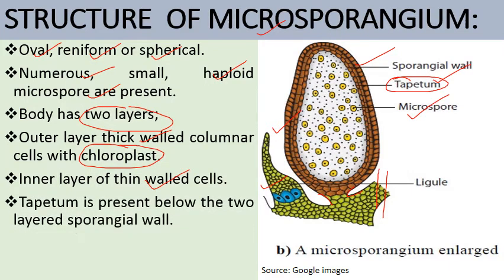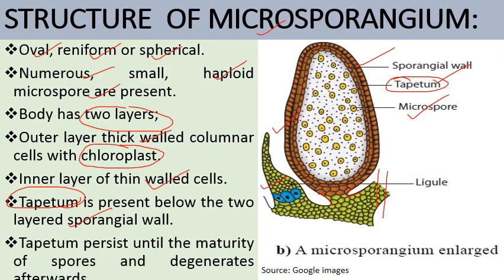The microsporangium body has two wall layers: the outer layer is made up of thick-walled columnar cells containing chloroplasts, and the inner layer is made up of thin-walled cells. Inside these two layers is the tapetum, which is a single layer and persists until the maturity of the spore, after which it gets disintegrated. Its main function is to provide nutrition to the developing microspores.